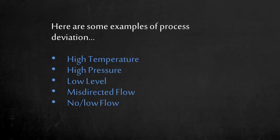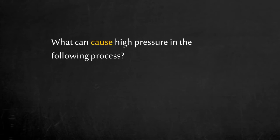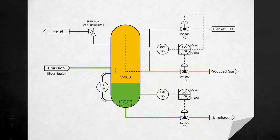By having the team focus on a specific deviation, the discussion becomes more focused and productive. Let's look at an example in the oil and gas industry. What can cause high pressure in the following process? Here you have a pressure vessel with product coming in as emulsion. This vessel has a pressure control loop and a level control loop, with a maximum allowable working pressure slightly above the pressure safety valve set point of 3400 kPag.